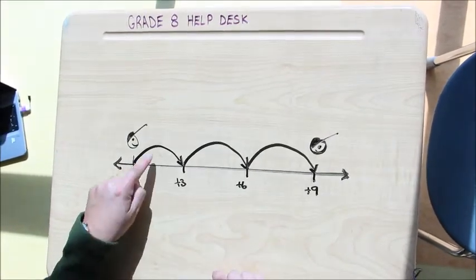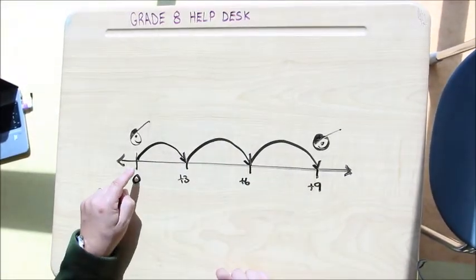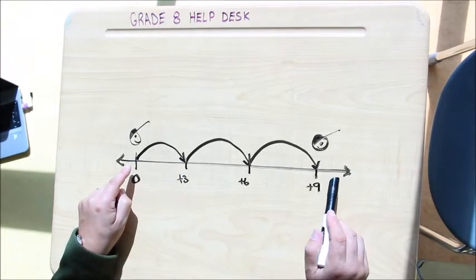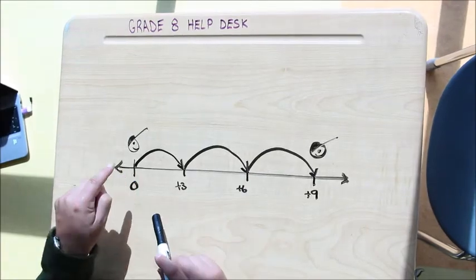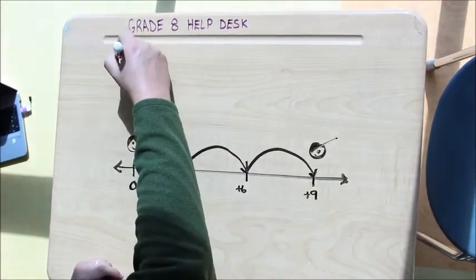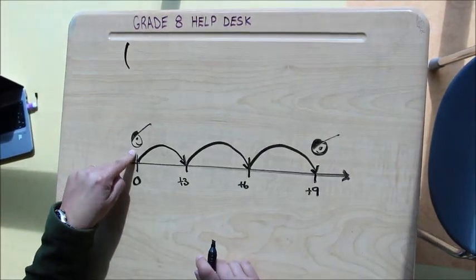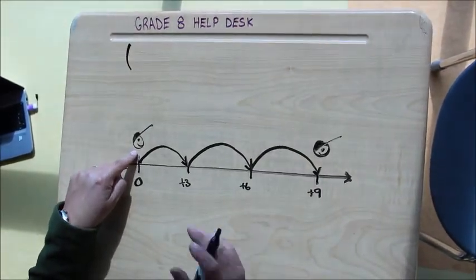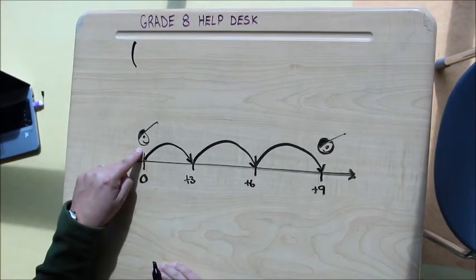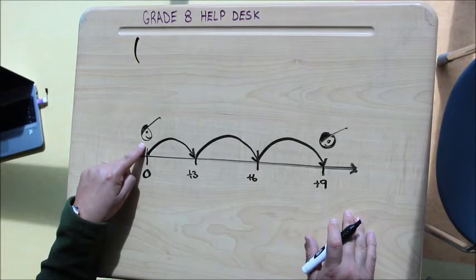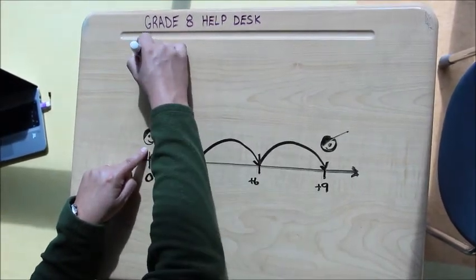First of all, these arrows are indicating a direction, okay? So we know that this little person is jumping in this direction. So right off the bat, we know that this is our starting point. So our starting point will give us our first integer. So the direction that this person is facing tells us whether our integer will be positive or whether it will be negative. This little person here is facing towards the positive or the right side of the number line. So we know that our first integer is going to be a positive.